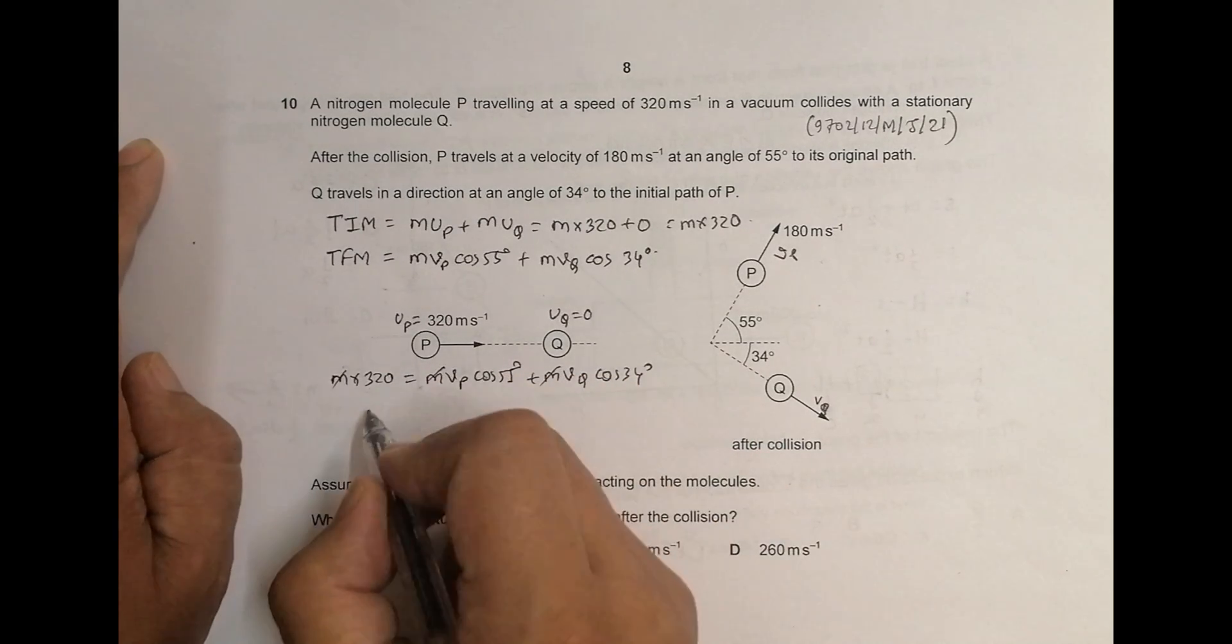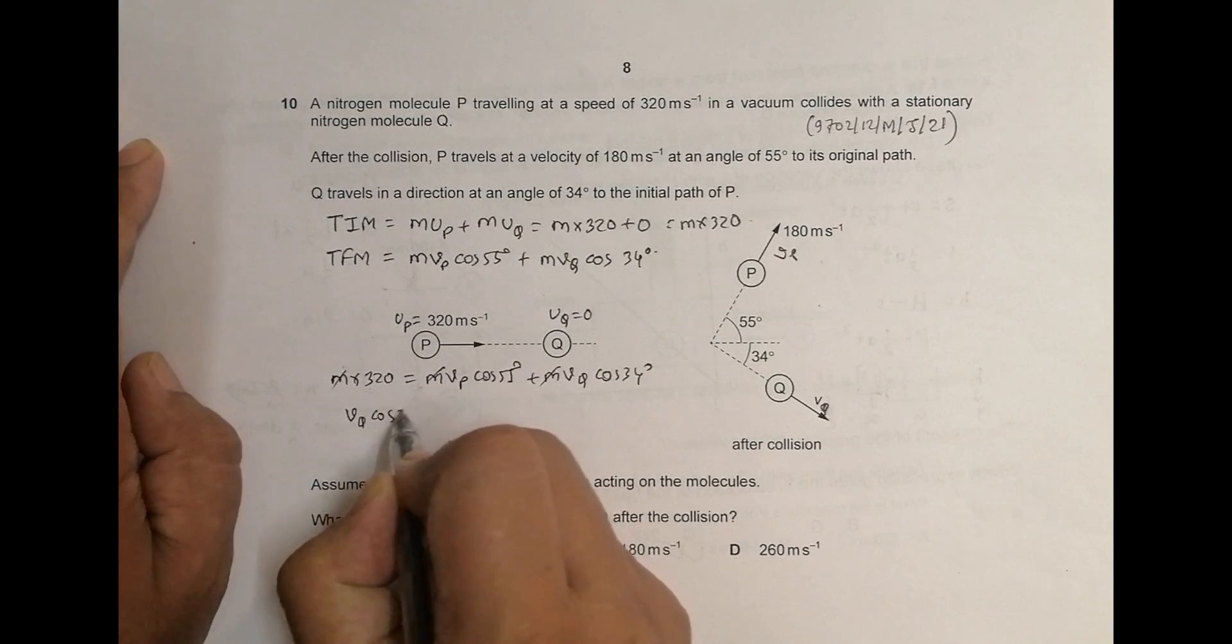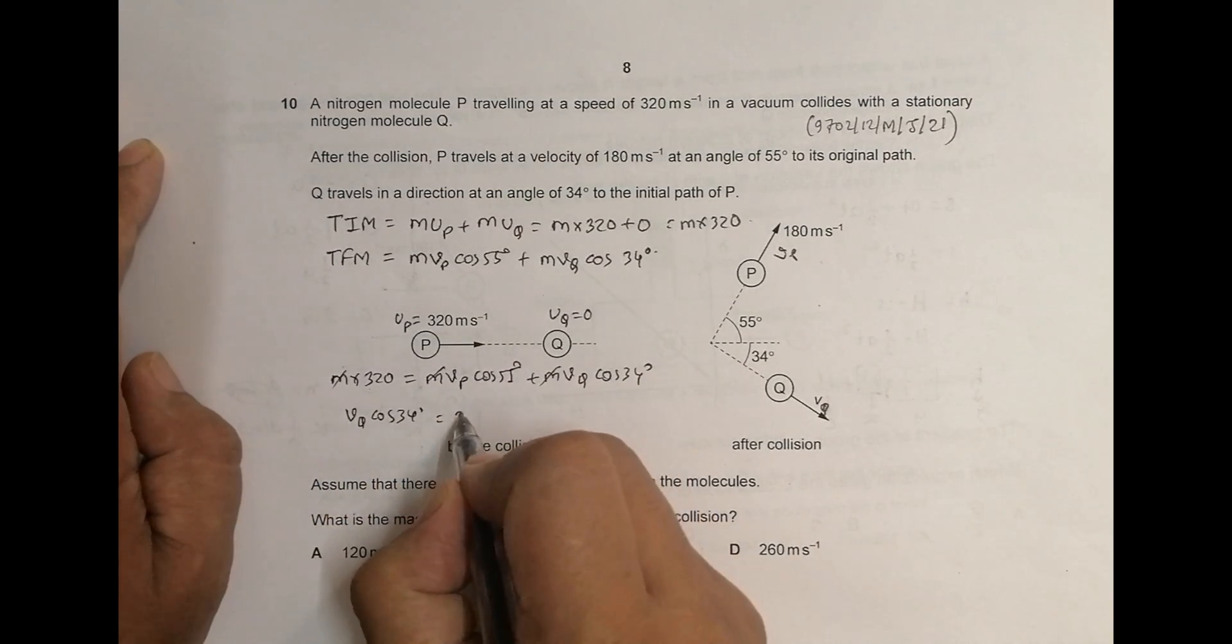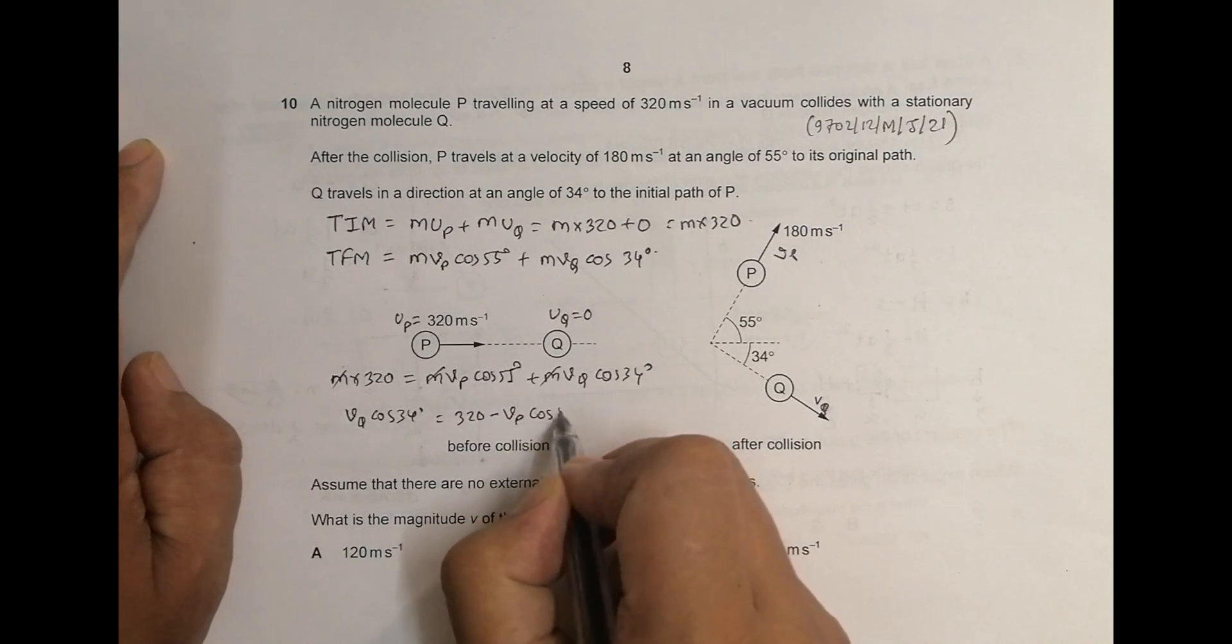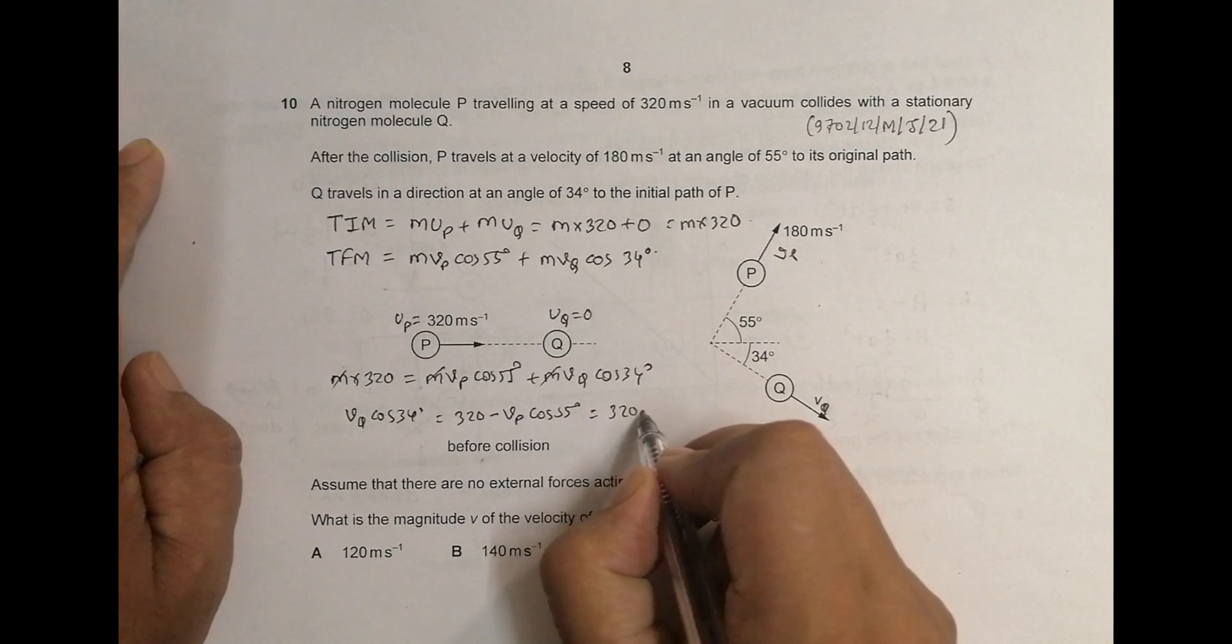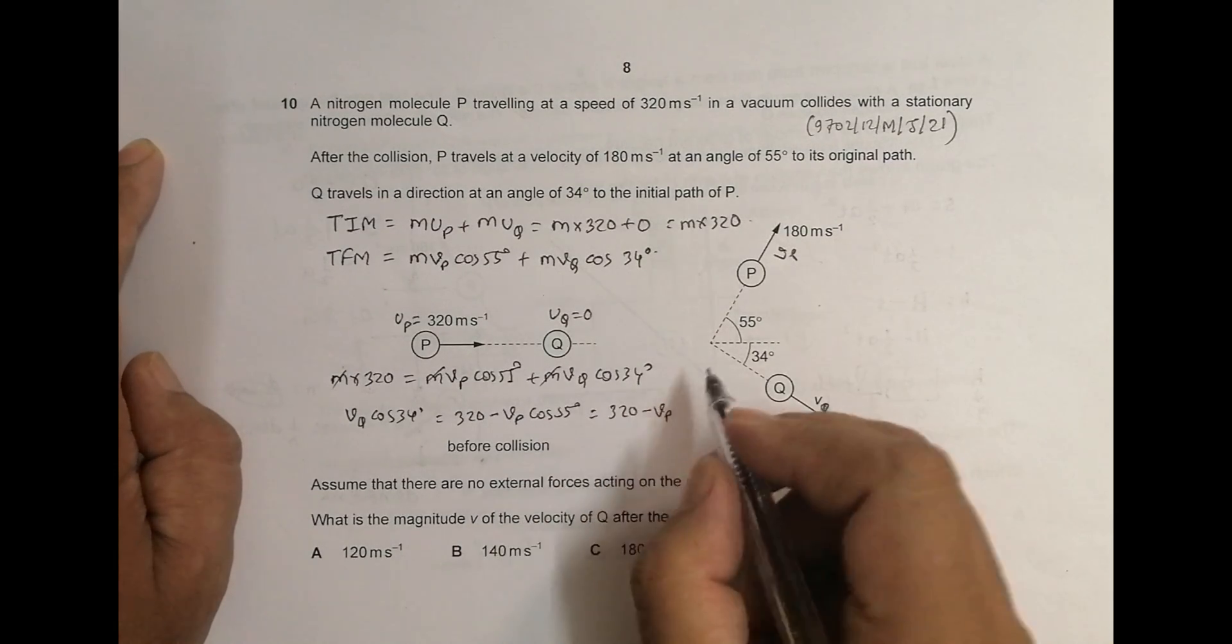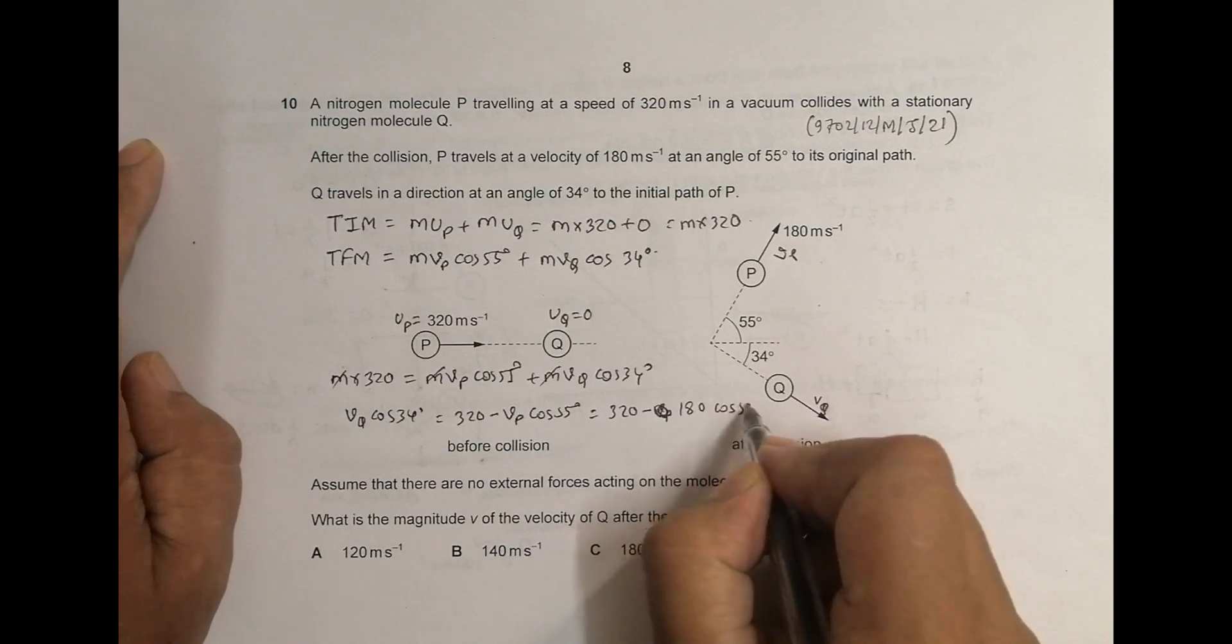so what remains here is V Q cos of 34 degree is equal to 320 minus V P, so V P is equal to 180 cos of 55 degrees.